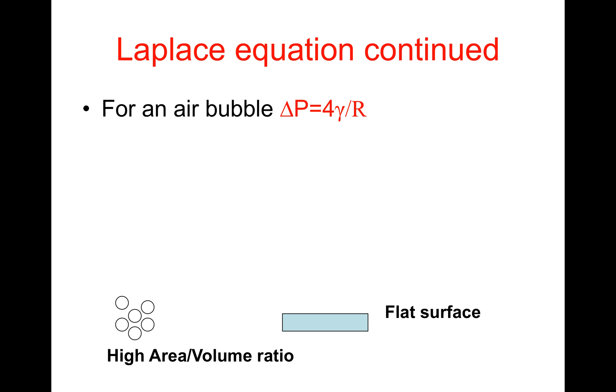For an air bubble, ΔP equals 4γ/R. This is because an air bubble has got two surfaces, the inner and the outer.